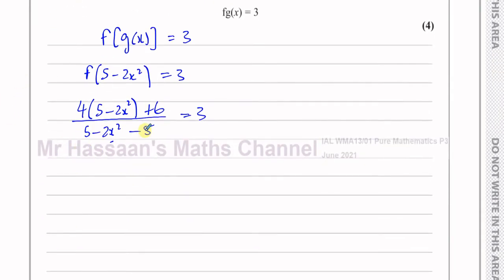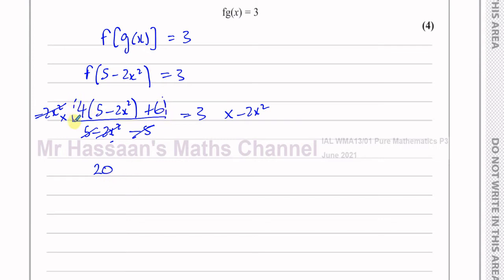Let's simplify. 5 − 5 = 0, so those cancel, leaving −2x² in the denominator. Multiplying both sides by −2x², on the left we get 4(5 − 2x²) + 6, which gives 20 − 8x² + 6. On the right we get 3 × (−2x²) = −6x².